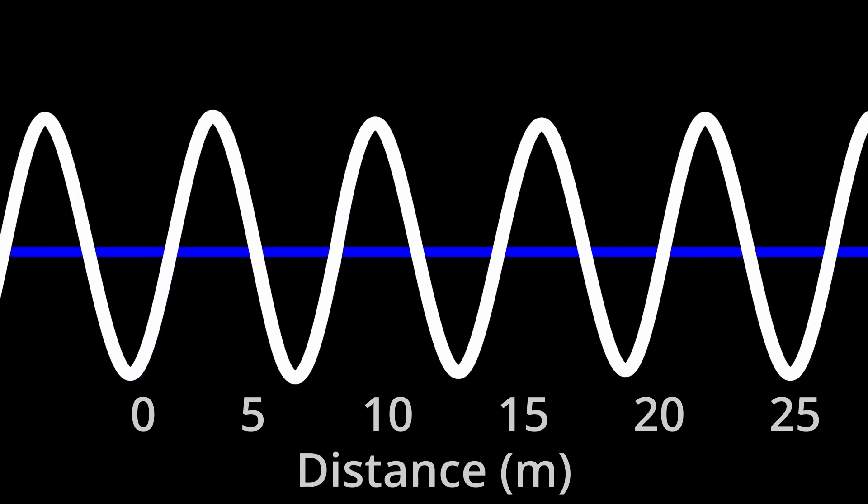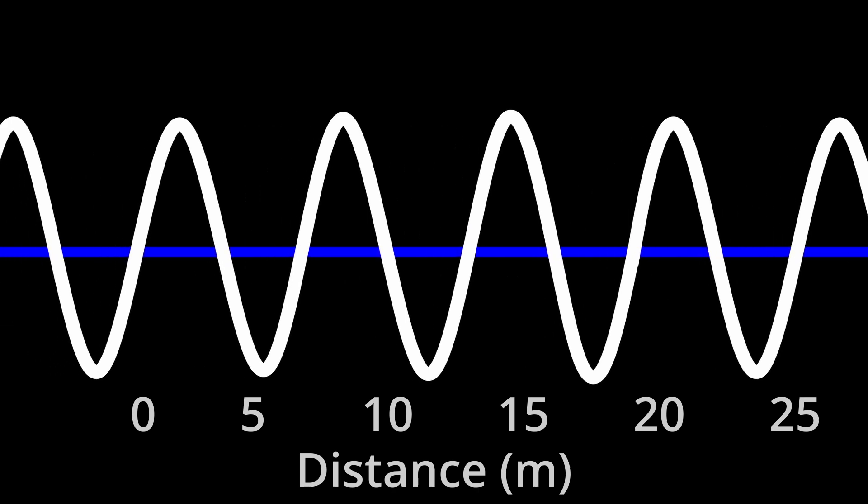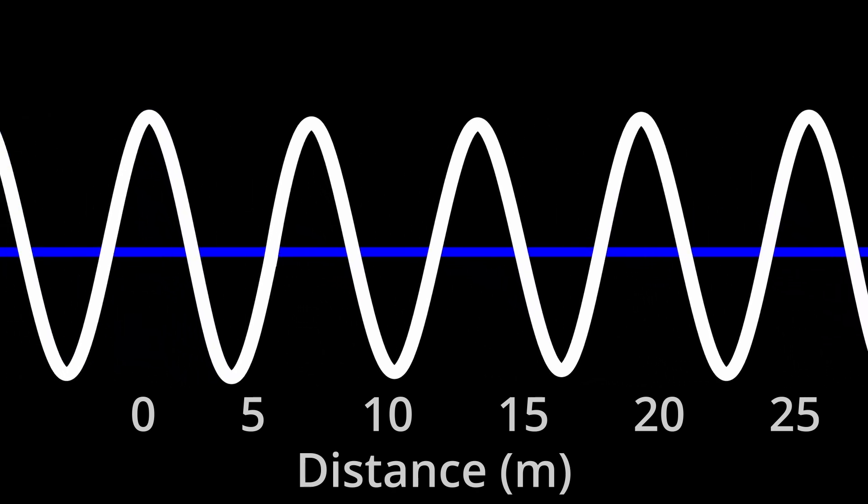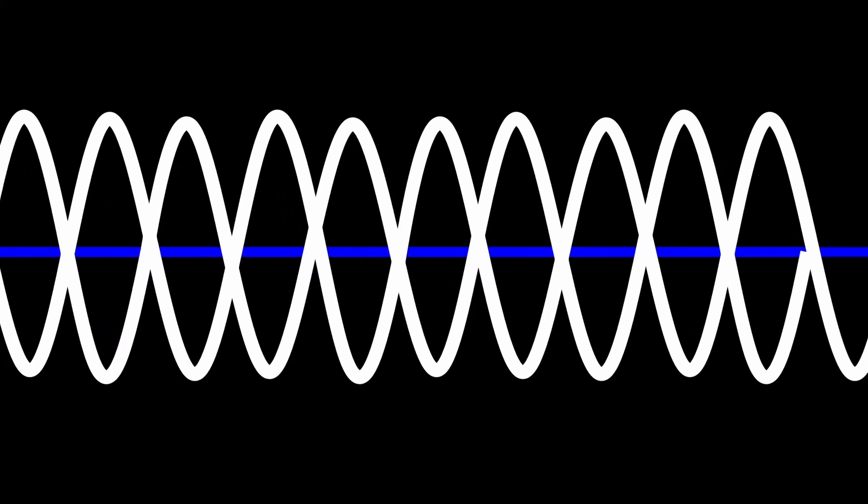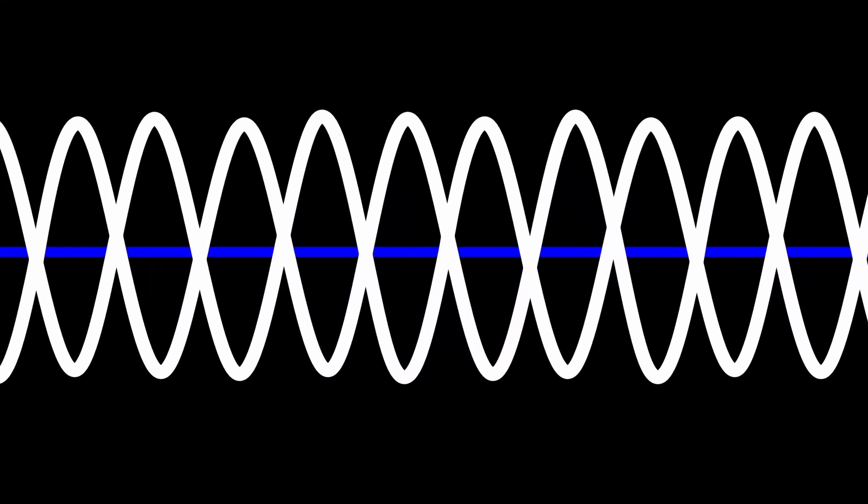The number of cycles, or times it repeats in one second, is called the frequency. When an electric field and magnetic field are joined, electromagnetic waves are created.